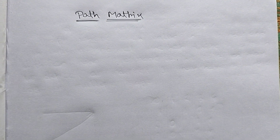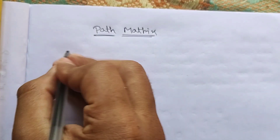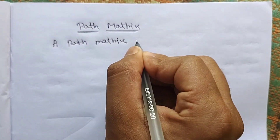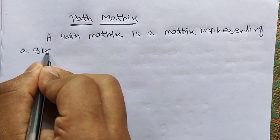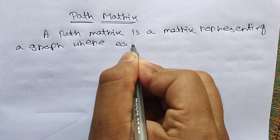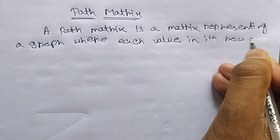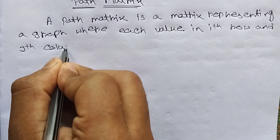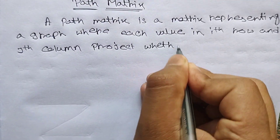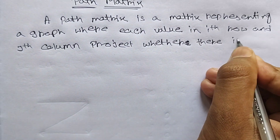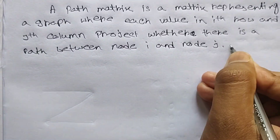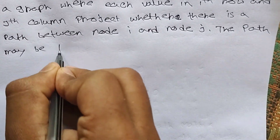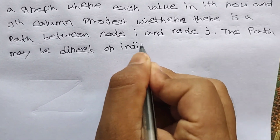Hello friends, welcome to Easy Study channel. In our graph playlist, today's topic is path matrix. A path matrix is a matrix representing a graph. A value in the i-th row and j-th column projects whether there is a path between node i and node j. The path may be direct or indirect.